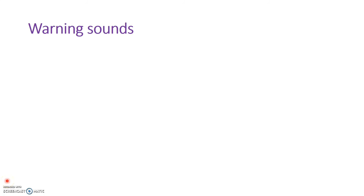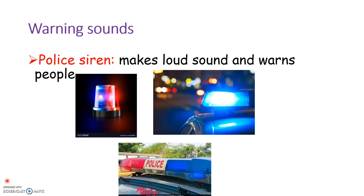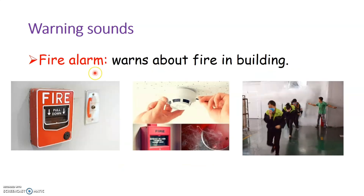The next type of warning sounds are produced by police vehicles. Police sirens are very loud and warn people of an emergency or danger. The next type of warning sound is produced by fire alarms. Whenever we hear a fire alarm, it gives us a warning about fire in the building and tells us that we all have to leave that place immediately. Such fire alarms give a loud sound and warn people about fire in the building.